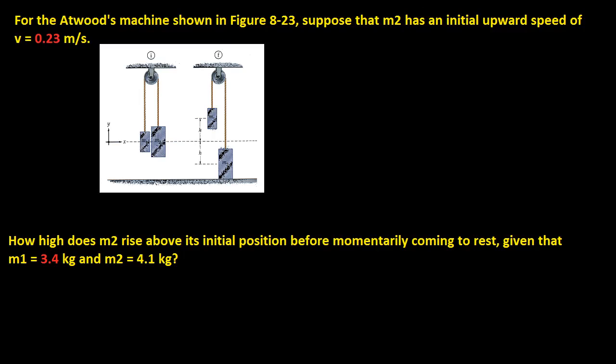So how high does M2 rise above its initial position, which is at 0, before momentarily coming to rest, given that M1 is 3.4 kilograms and M2 is 4.1 kilograms? Well, to start this off, let's just say that we all agree that kinetic energy 1 plus potential energy 1 is equal to kinetic energy 2 plus potential energy 2, right? And I'm going to define M as M1 plus M2.